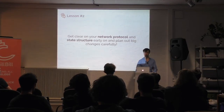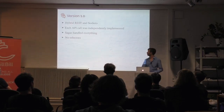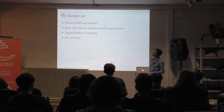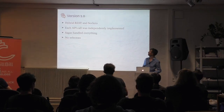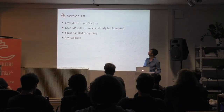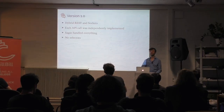Lesson number two: get clear on your network protocol and state structure early on and plan out big changes carefully. When we first started, we had a pretty crazy hybrid REST and Sockets protocol — we used both of them. The way we had implemented it, every single API call was independently implemented. We didn't have a common network structure, so it made things pretty confusing to handle. Our Saga basically handled everything, and we didn't use selectors at first.